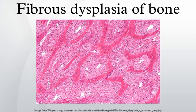Fibrous dysplasia is very rare, and there is no known cure. Fibrous dysplasia is not a form of cancer. Most lesions are monostotic, asymptomatic and identified incidentally, and can be treated with clinical observation and patient education. This disorder is usually diagnosed in childhood or early adulthood and can affect one or several bones. Males and females of any race are equally affected.